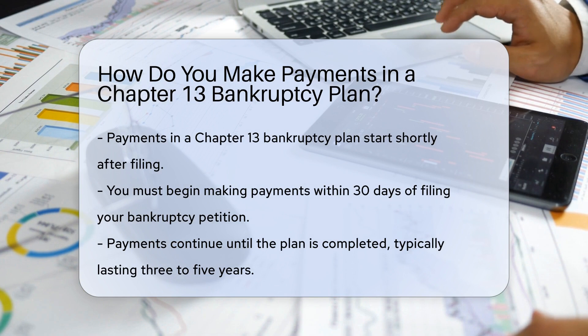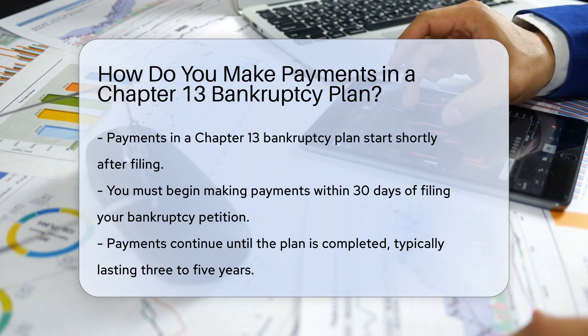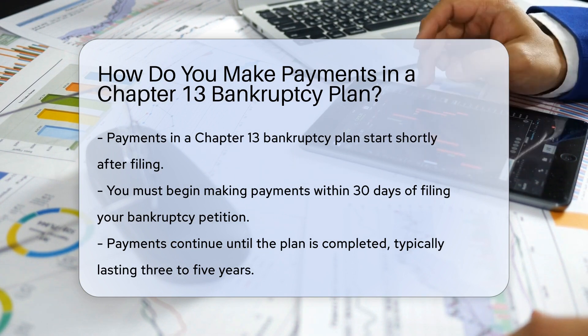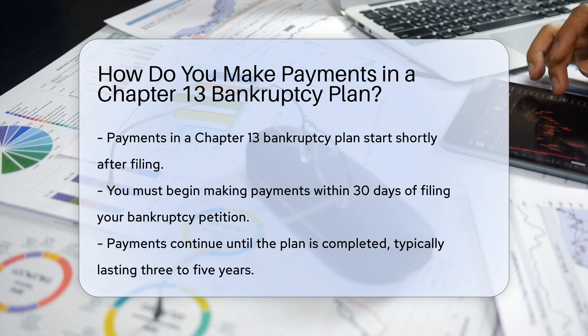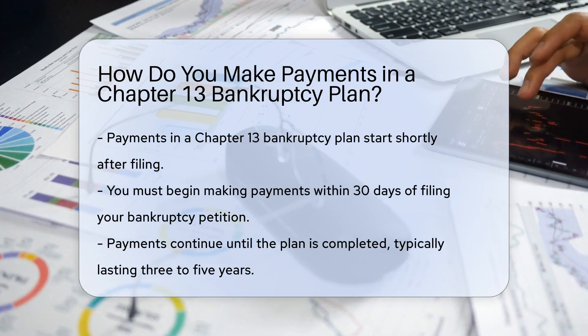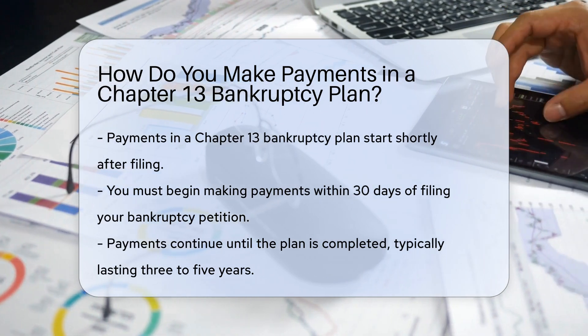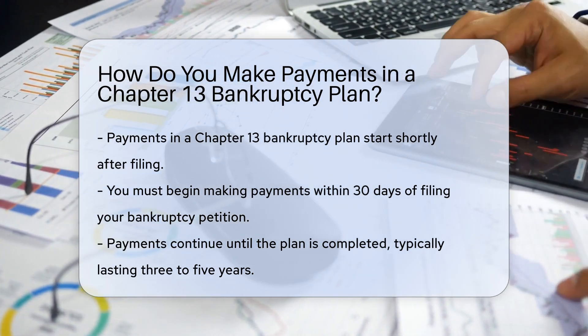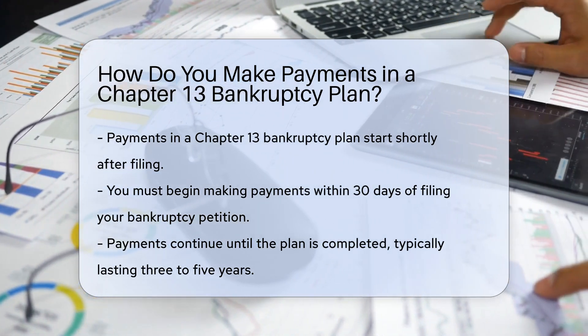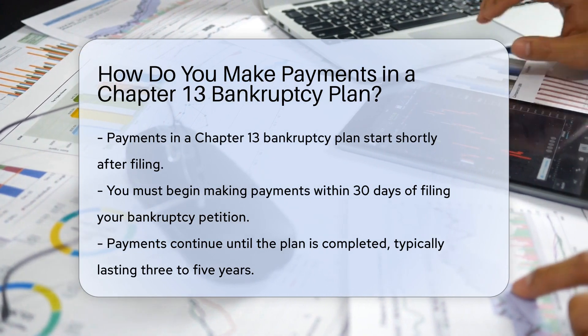How long do payments last? Chapter 13 plans typically last between three to five years. During this period, you will make regular payments to a trustee who will distribute these funds to your creditors.